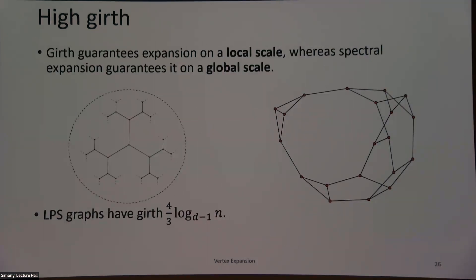An intuitive comparison: girth guarantees expansion on a local scale, whereas spectral expansion is a statement about a random walk on a global scale. On a local scale, if my graph looks tree-like, there aren't too many intersections and it mixes as quickly as possible. Spectral expansion is a statement about how quickly it mixes across the entire graph. We know that initially, before any perturbation, we're working with high-girth graphs, because the LPS graphs have girth (4/3) log N.